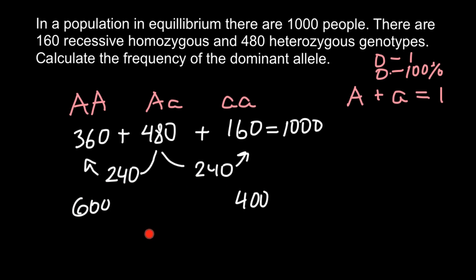If we add these two numbers we are going to get 1000. That gives us frequency of the dominant allele A as 60%, or we can also say that this is going to be 0.6.